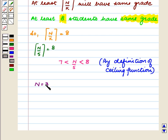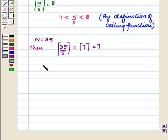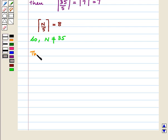Now, if n equals 35, then the ceiling of 35 upon 5 equals the ceiling of 7, which equals 7. But we have the ceiling of n by 5 equals 8. So n is not equal to 35. Thus, n is strictly greater than 35.